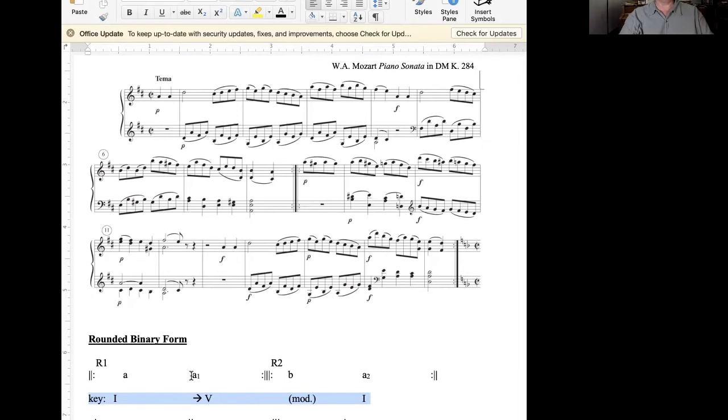But what it has in common with rounded binary form is that the first section will stay in the tonic. If we start in a major key, our secondary key will be the dominant, usually. If we start in a minor key, the secondary key will be the relative major, usually. And again, there might be multiple themes within this secondary key area, and then, towards the end, we go to a section that is referred to as the closing section. This first section, called the exposition, in a sonata form, would be repeated.